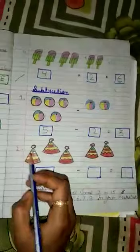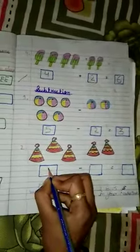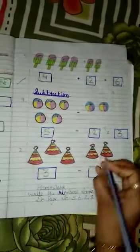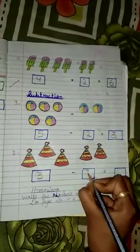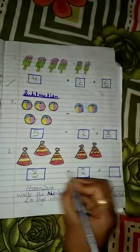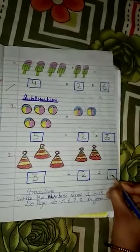Next question. How many caps are there? 1, 2, 3. What should we write here? 3. And how many caps are there? 1, 2. Then 3 minus 2 equal to what? 3 minus 2 equal to 1.